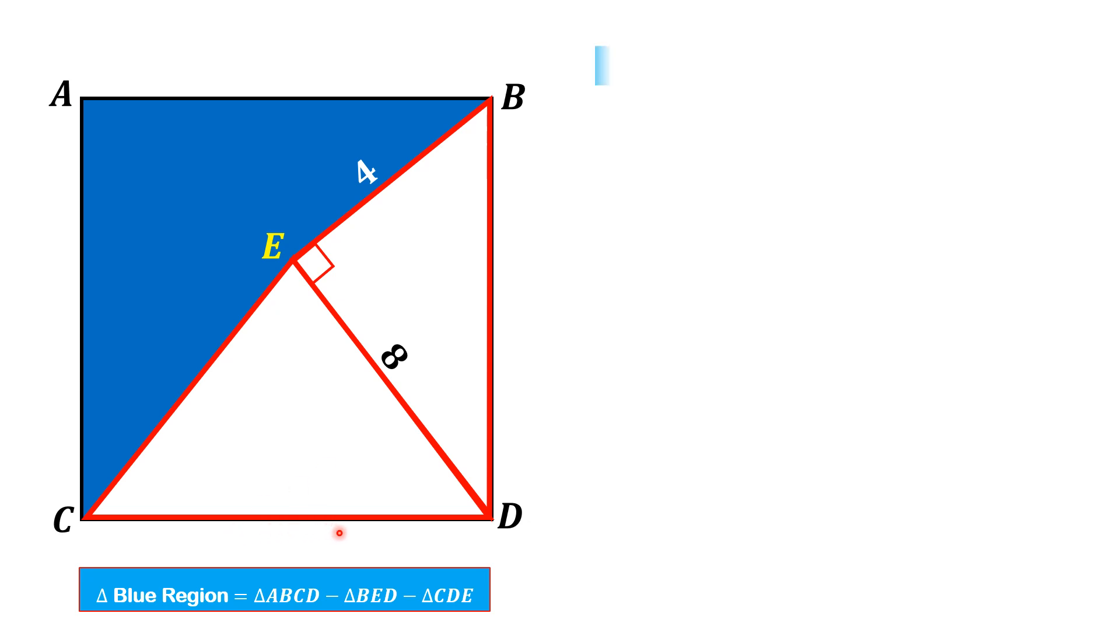Now let me consider triangle BED, this right triangle BED. From here we find the hypotenuse which is actually the side of the square by using Pythagorean theorem. So BD by Pythagorean theorem is equal to square root of 4 squared plus 8 squared, that is equal to the square root of 80, thus it is equal to 4 times square root of 5. Now this is actually the side of the square.